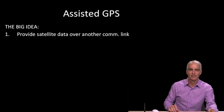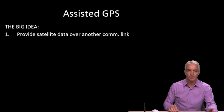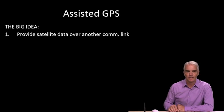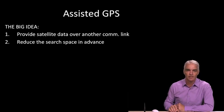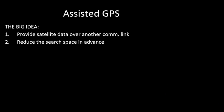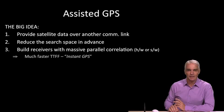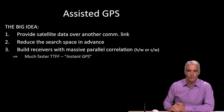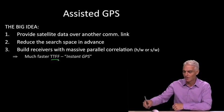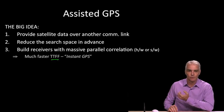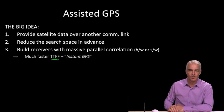And so to summarize, then, the big idea of assisted GPS is simply this: provide satellite data over another communication link. And then you can start to do other things. Because of that, you can reduce the search space. Remember the search space that we just looked at in detail in the previous video? That search space can be reduced in advance of searching it. And because of that, you could have a much faster receiver. And indeed, if you then build receivers with something called massive parallel correlation, which we'll look into in the other videos in this module, you can get very fast time to first fix, TTFF, and get almost instant GPS, where you switch on your cell phone or you switch on the GPS in your cell phone and get a GPS fix almost right away.